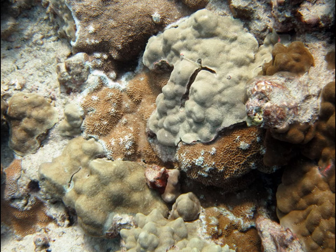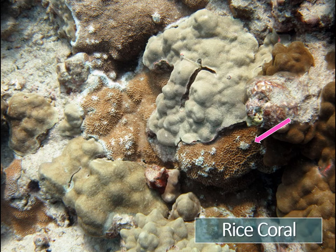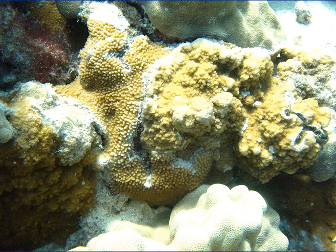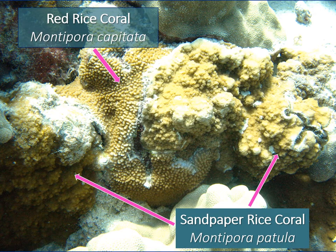Can you recognize rice coral in this image? Rice coral, including red rice coral, is often encrusting in between larger smooth mounding coral colonies. Are you able to recognize the two types of rice coral in this image? Differences in coral surface texture are the best way to distinguish red rice coral from sandpaper rice coral.